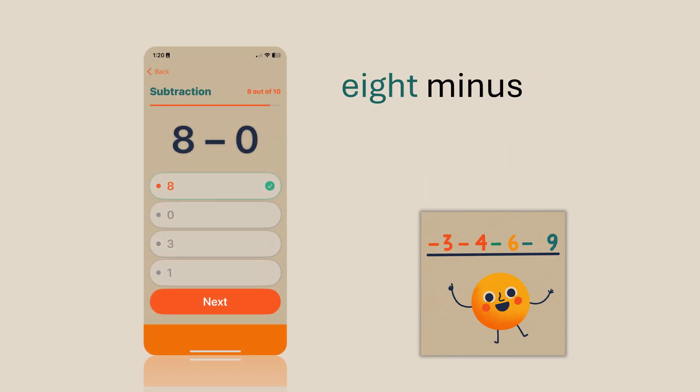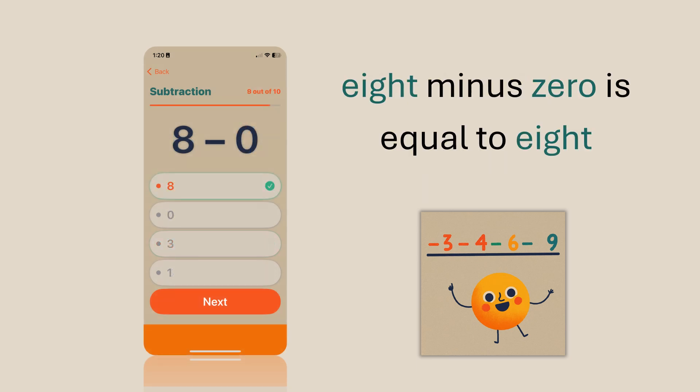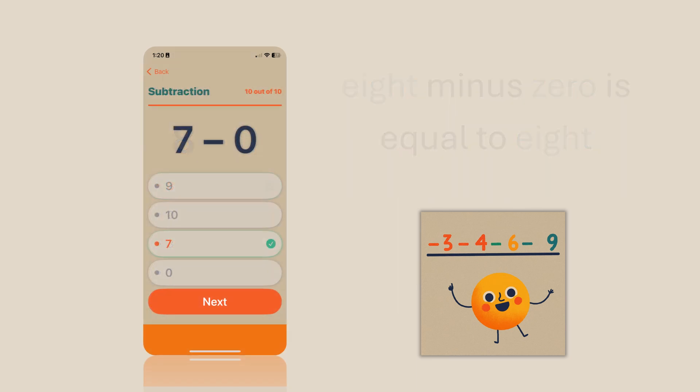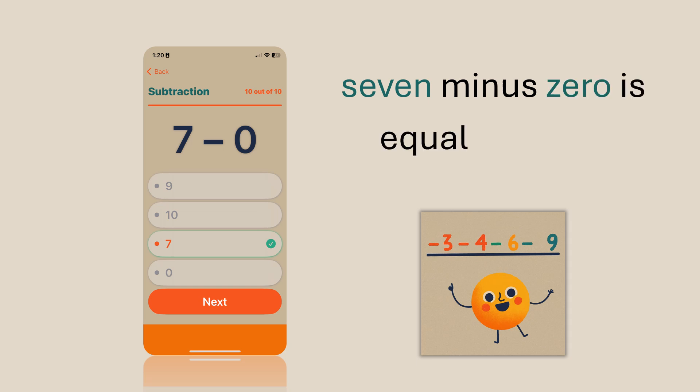8 minus 0 is equal to 8. 7 minus 0 is equal to 7.